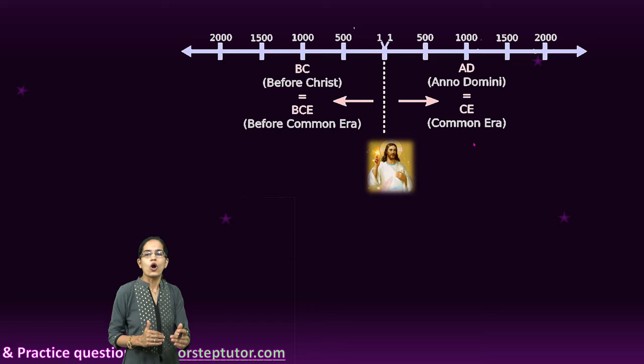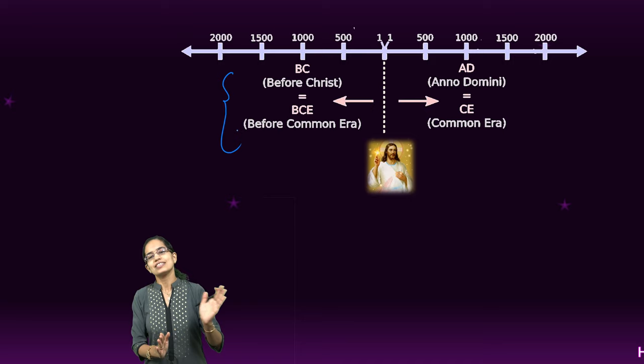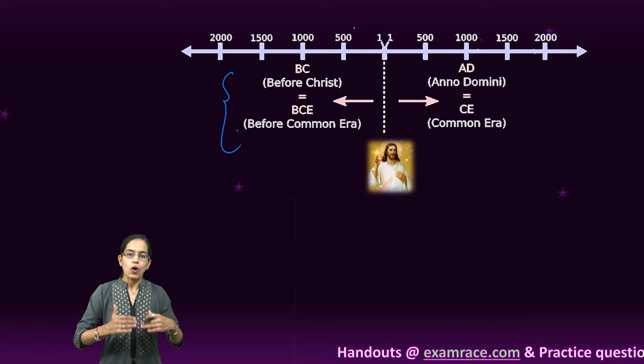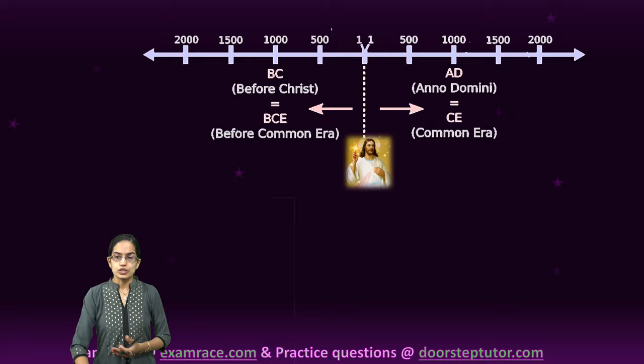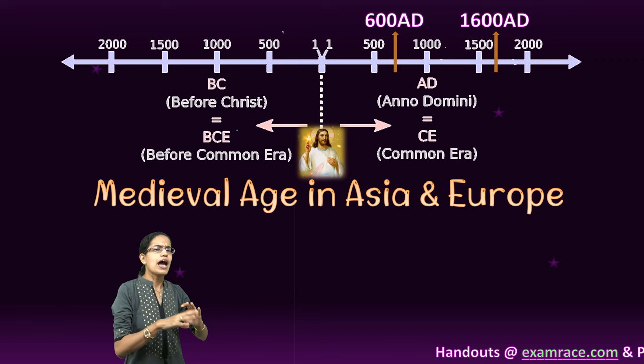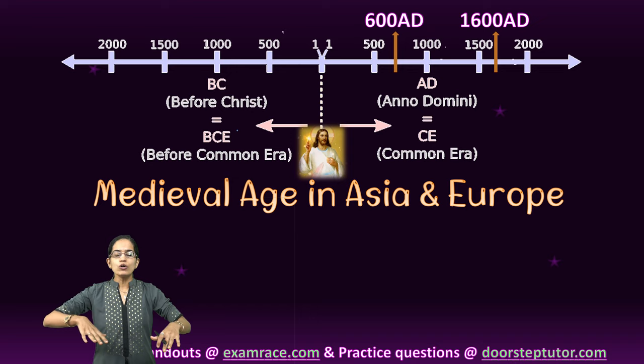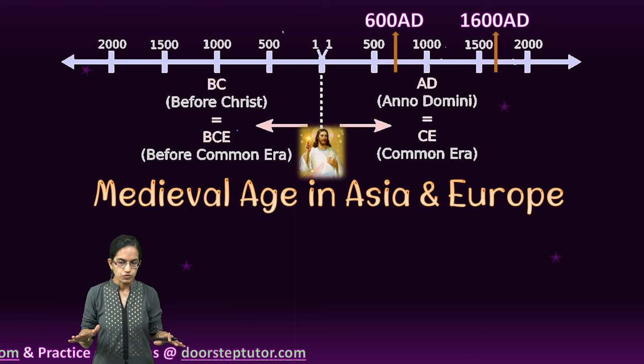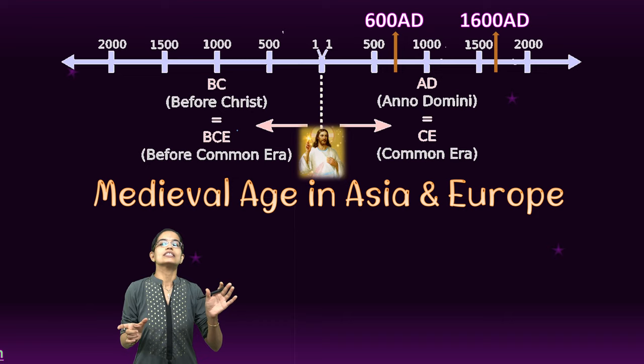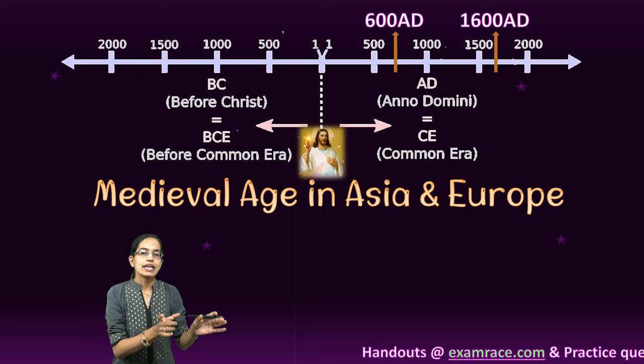The period after the birth of Christ is known as AD, that is Anno Domini, also called CE or Common Era. The Middle Ages will be our focus today. This Middle Age varies across the regions of Asia, Europe, and India. If we focus on the region of Asia and Europe, 600 to 1600 AD is considered the period of the Middle Ages, or what we call the Medieval Age.